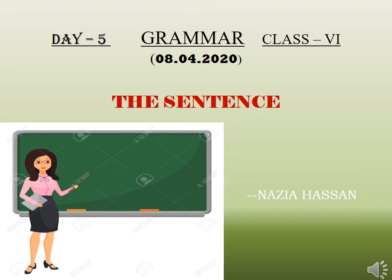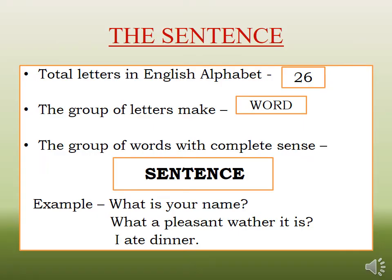Good morning students. This is day 5 of our lesson and this is the very first lesson of grammar. We are going to start with the first chapter: the sentence. As we know, there are 26 letters in the English alphabet. When we join those letters together, it makes a word. And when we join a group of words together to get a complete meaning or complete sense, it is called a sentence.